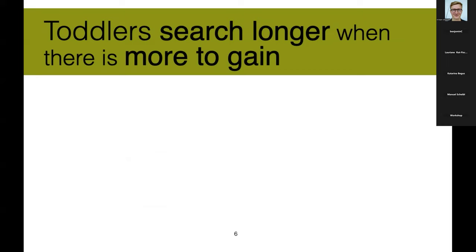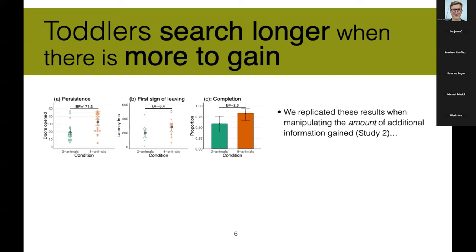So we replicated these results in a second study, where instead of contrasting a certain one animal condition, which one may argue is a little more salient, we used the two animals condition, in which the uncertainty was still there, although it was there to a lesser extent compared to the eight animals condition. So we basically found the same results. So these are the same three measures I presented before. And again, we have in orange, the eight animals condition and in green, the two animals condition.